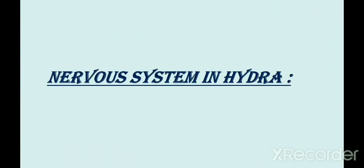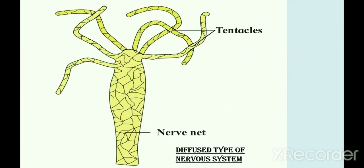We have to start with a smaller animal — the nervous system in Hydra. Hydra is a cnidarian and shows a diffused nervous system, which is the most primitive nervous system. Cnidarians are thus the first animal group showing a true simple nervous system. It consists of sensory cells and nerve cells. Nerve cells are scattered throughout the body along with their fibers, and they are interconnected to each other by synapses. A synapse is a gap between two neurons.